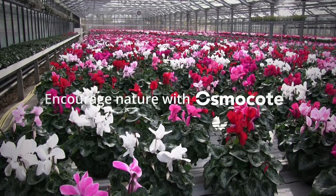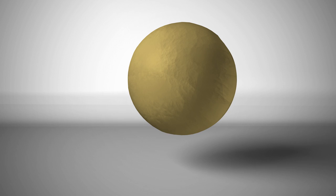Encourage nature with Osmocote, the pioneer in controlled release fertilisers. Osmocote fertilisers have special coatings that enable gradual nutrient release. Each granule is covered with an organic resin coating that regulates the daily release of nutrients.